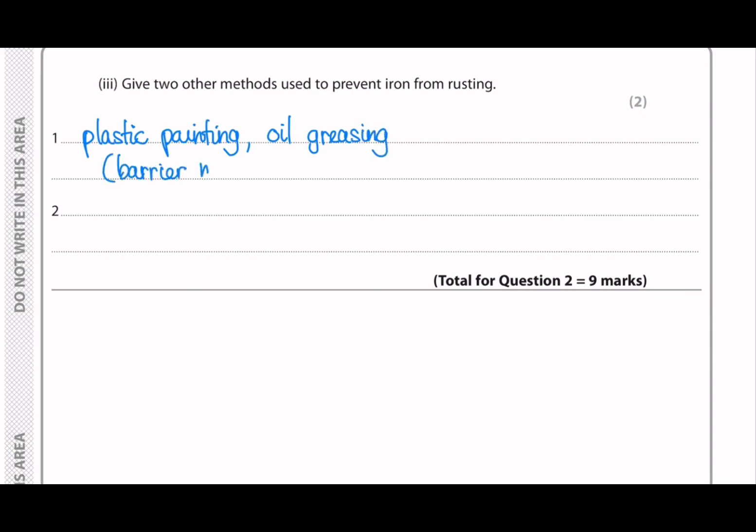And the second main method that people use is sacrificial protection or cathodic protection. And this method is to coat the iron with metals that are more reactive than iron. So that means any metal that is higher than iron in the reactivity series.